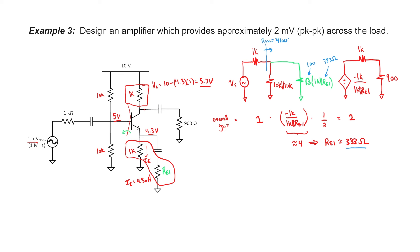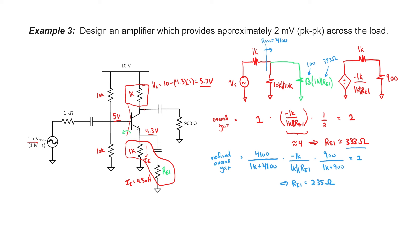Let's now refine my expression for the overall gain. I'll make RE1 a variable again, and instead of using one-half, I'll use a more proper expression for the output side. We need that to equal 2, so I can now find a better estimate for RE1. Solving this expression with RE1 as the only variable, I wind up with 235 ohms. I could iterate a few more times, but I'll stop here. The actual gain winds up being 1.9. It turns out that if you choose RE1 of 220 ohms, then it works out to exactly 2.